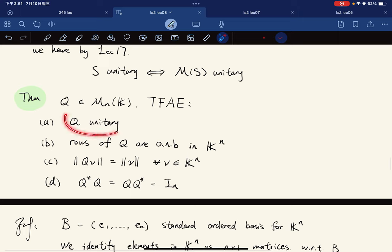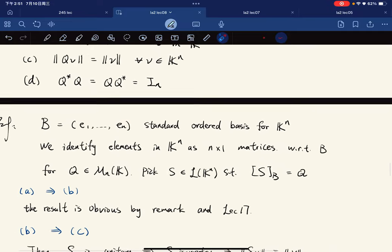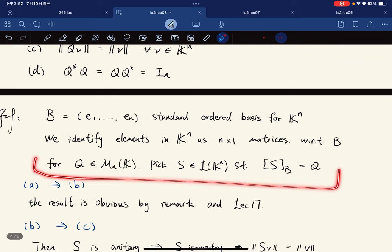So if U is unitary, the rows are orthonormal, and U is an isometry. It's basically our framework: let the old standard orthonormal basis for C^n, and we identify the columns in C^n as n×1 matrices with respect to B.